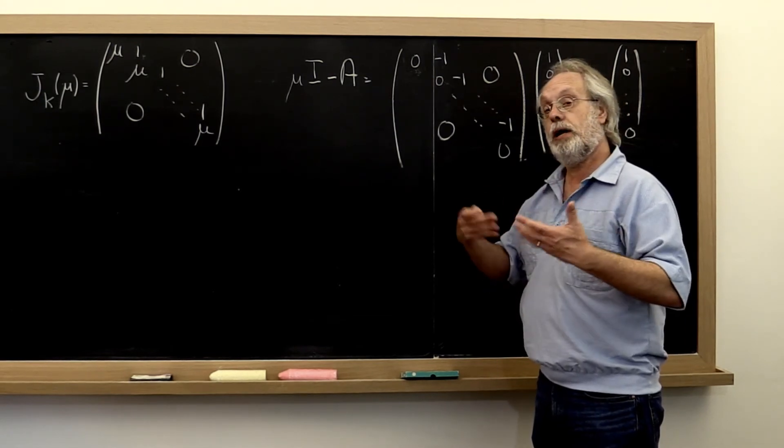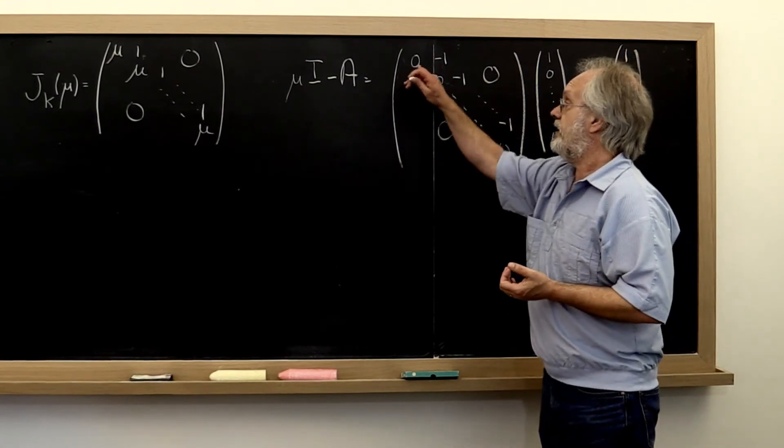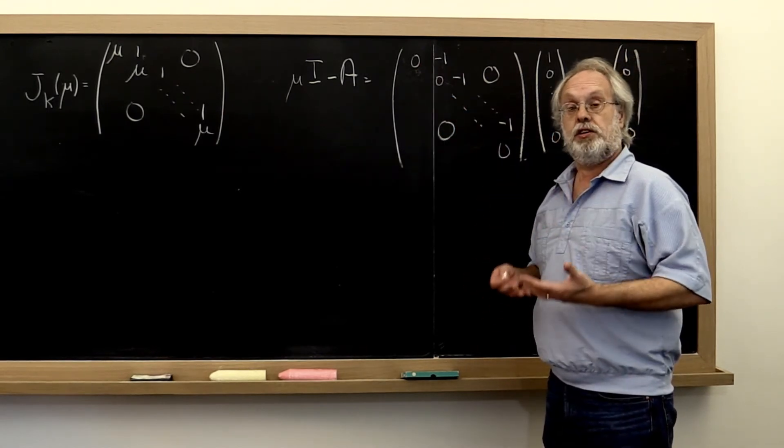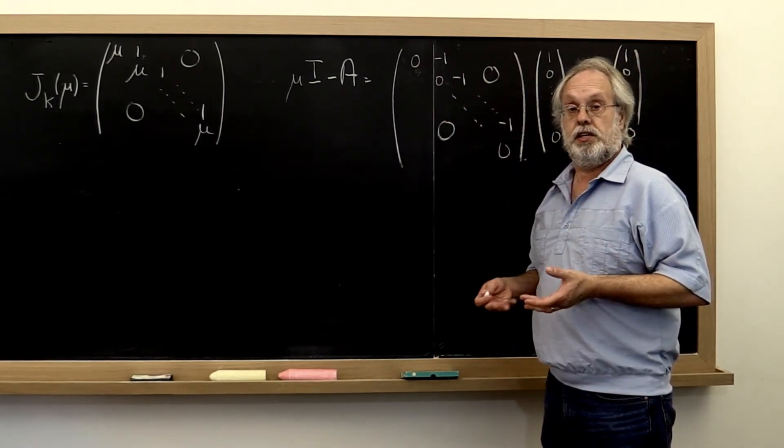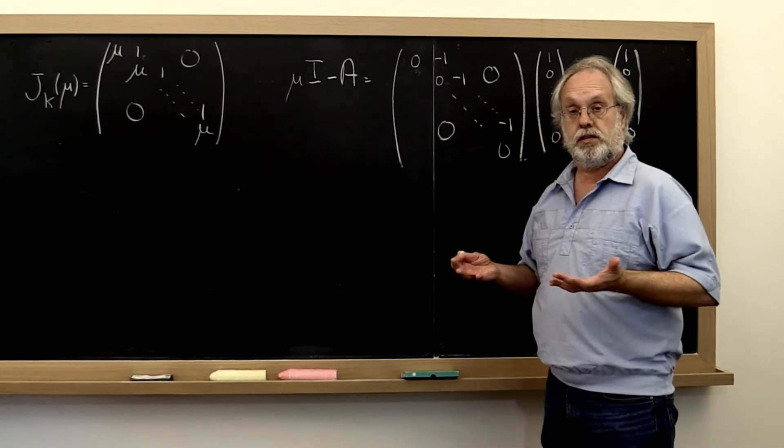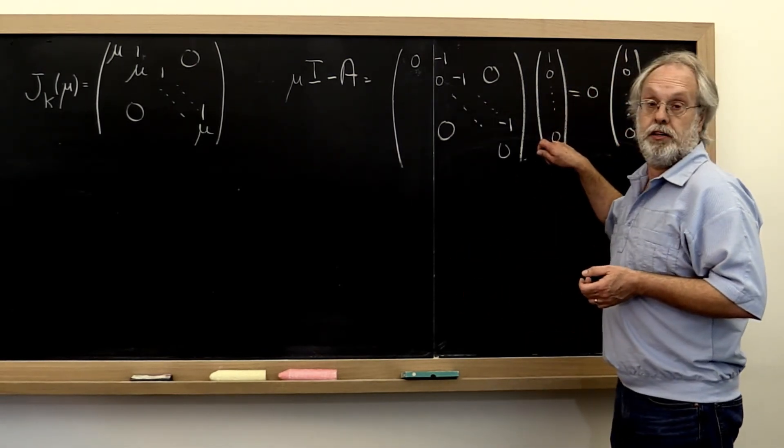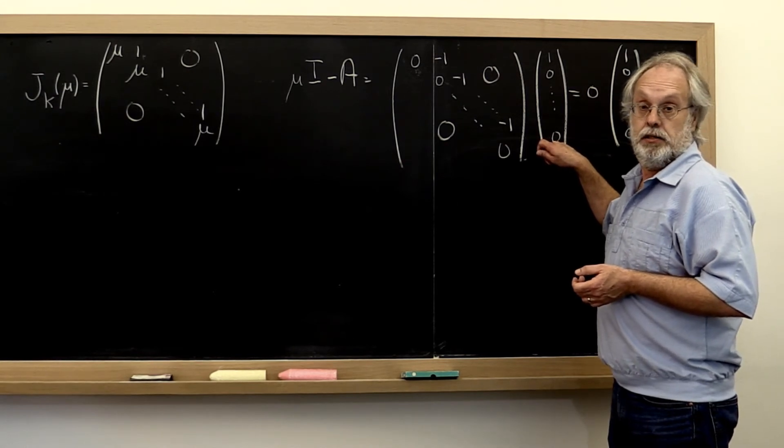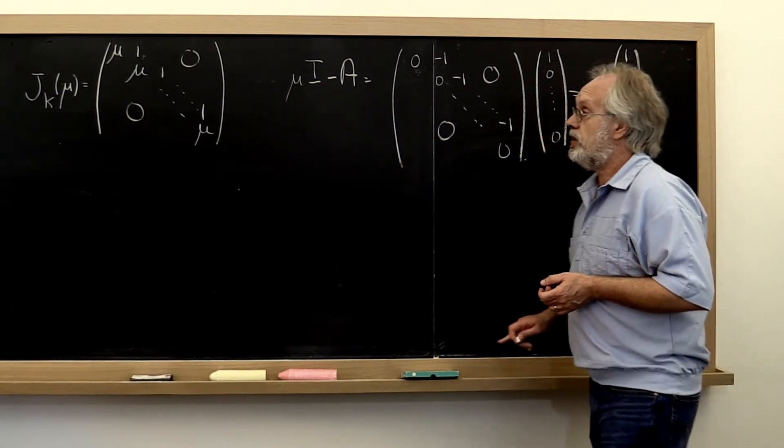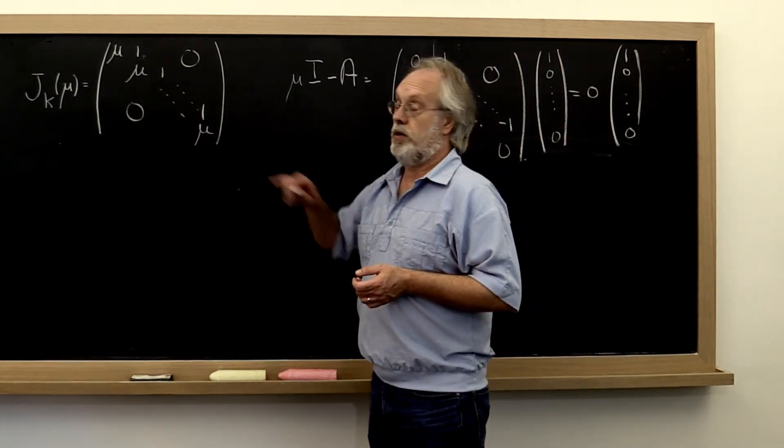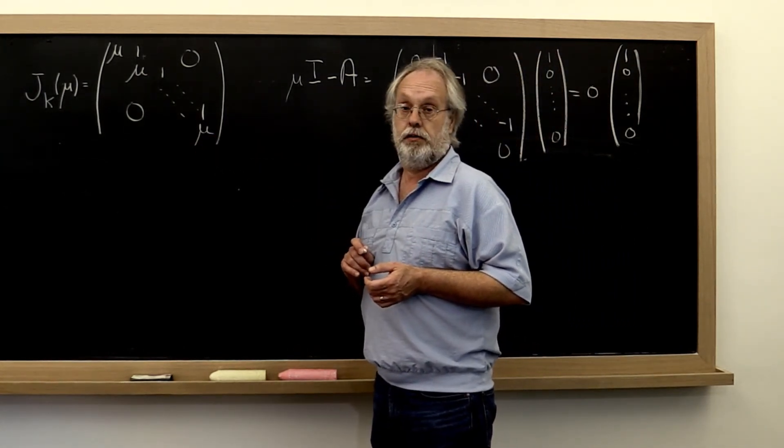And if you apply what you learned there to this situation, you find out that the dimension of the null space of this matrix is only one. What does that mean? It means that it can only have one linearly independent eigenvector, and that is also the eigenvector of this original matrix over here.